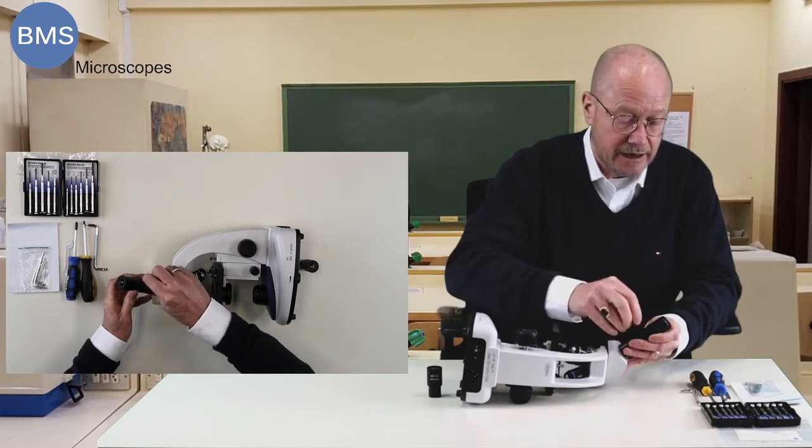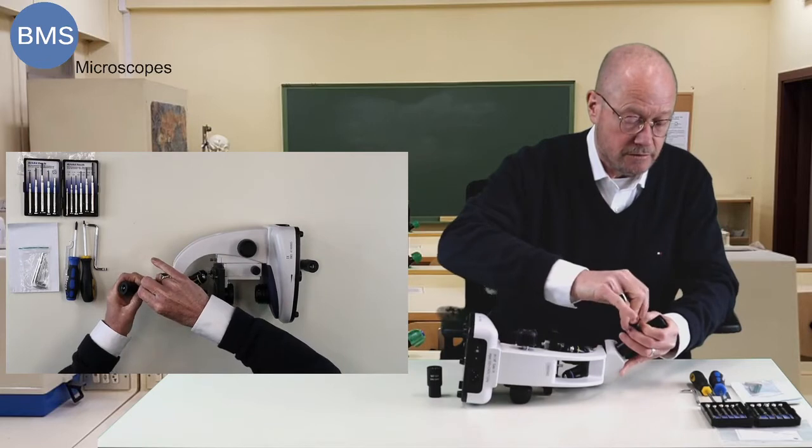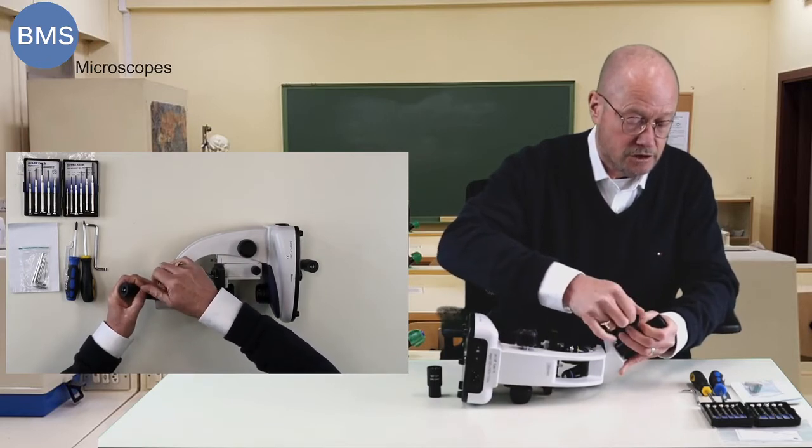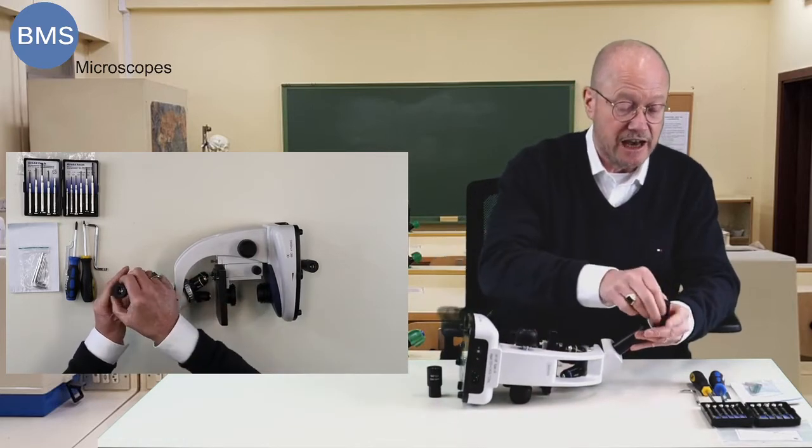Place the Allen key. Unscrew it just a little bit so the eyepiece comes out of the tube.